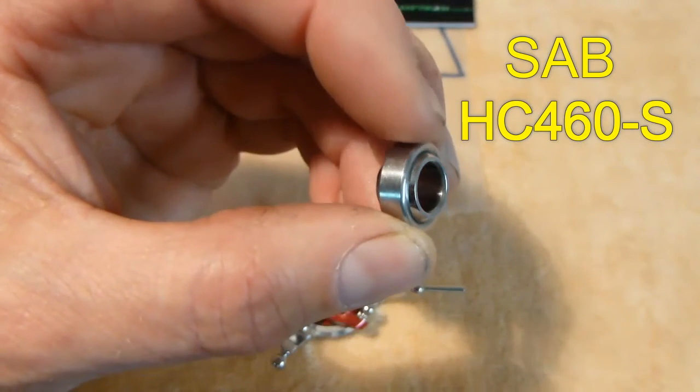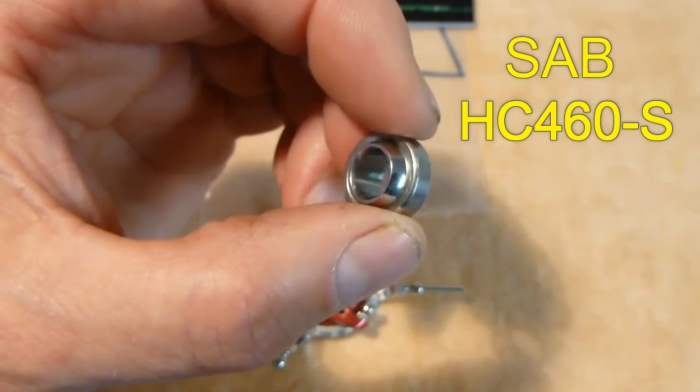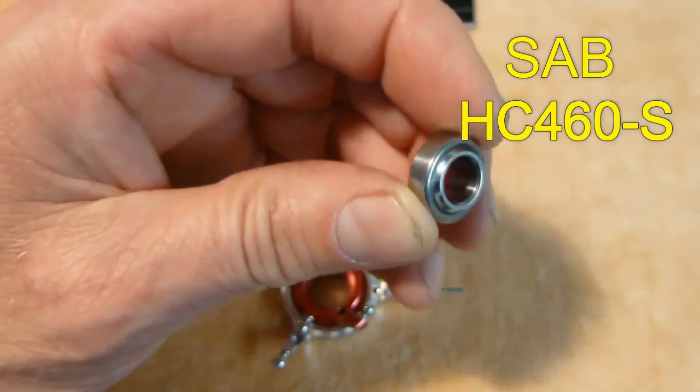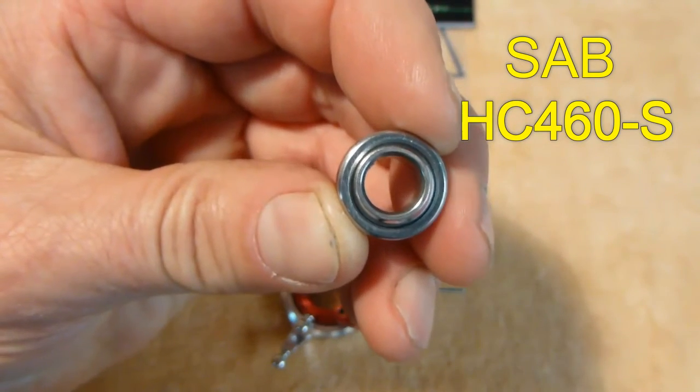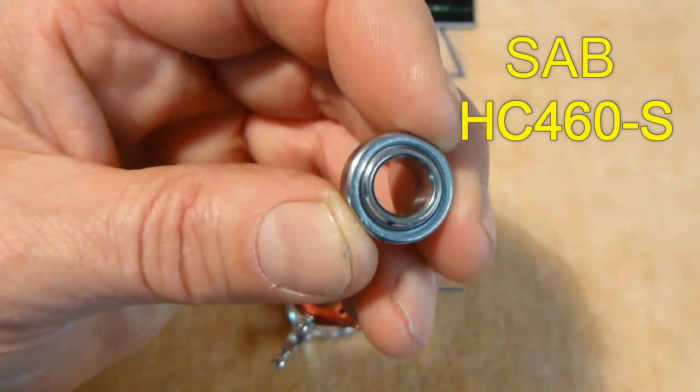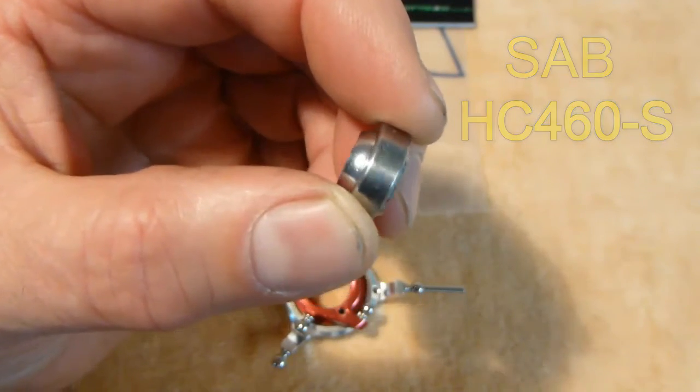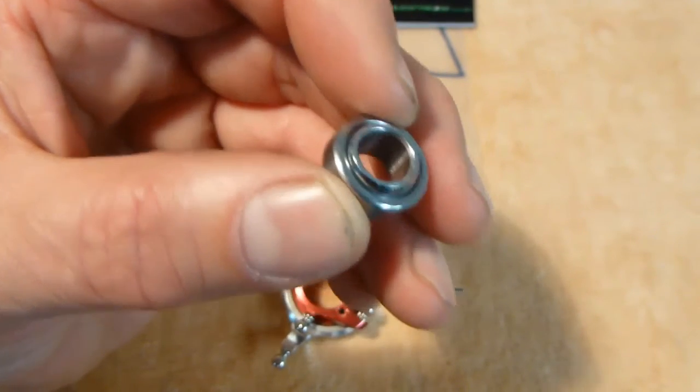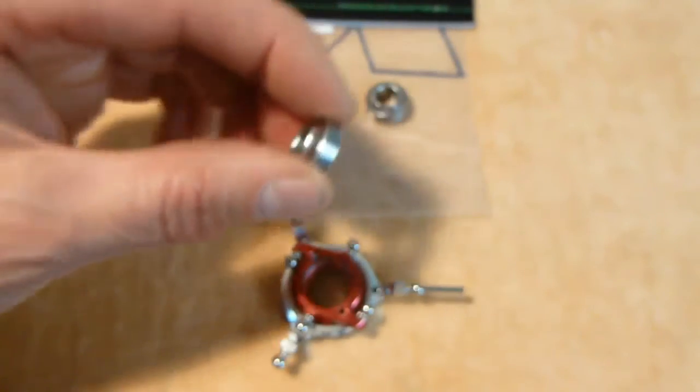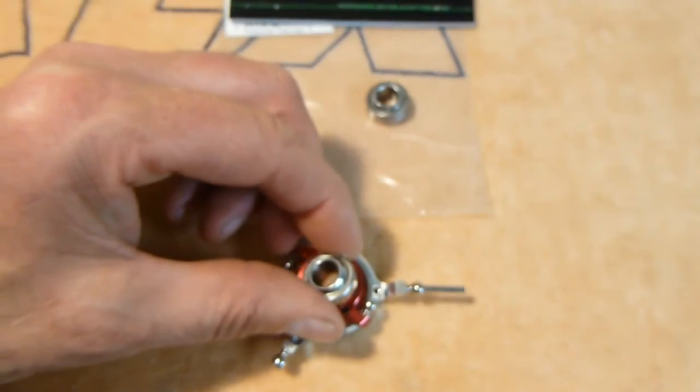Now I was able to find a replacement bearing. I wasn't sure if it would fit or not, but this is actually off a Goblin 380 swash plate and it is exactly the same size and it fits right in this swash plate.